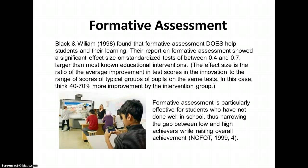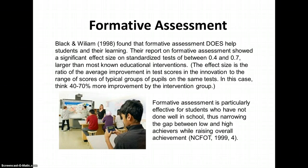Formative assessment — Black and Williams' research found that this does help students and their learning. Their report showed a significant effect size, which is the ratio of improvement in test scores between the group with the innovation — in this case who had formative assessment — and the control group who didn't. If we see an effect size of between 0.4 and 0.7, we can say there was 40 to 70% more improvement by the group that had formative assessment. Formative assessment has been found to be particularly effective for students who aren't doing well in school, thus narrowing the gap between low and high achievers. Although it works for high achievers, it works even better for low achievers — therefore we're raising overall achievement and closing the gap.